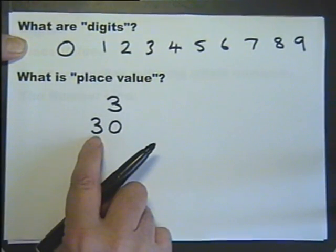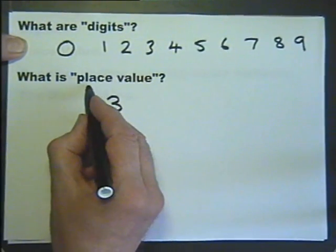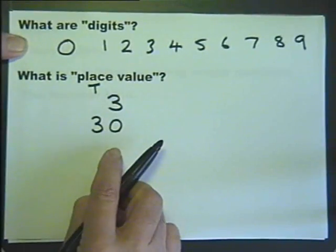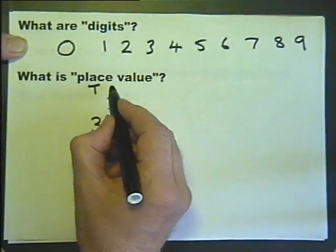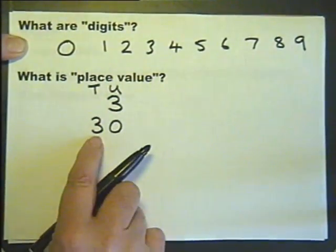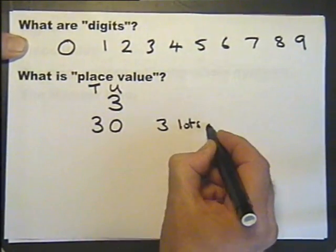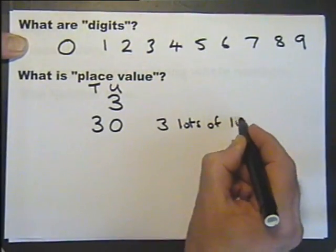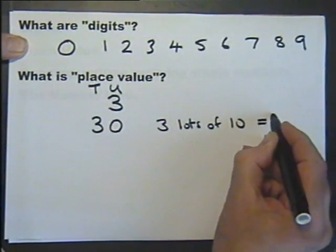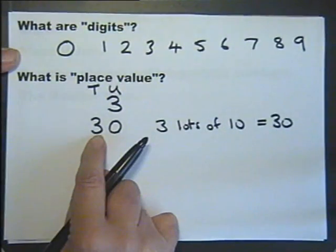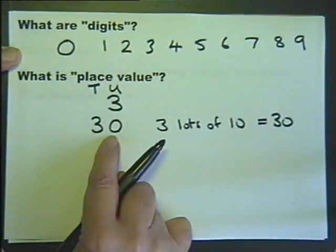This is because the 3 is in the tens column, and the zero is in the units column. So in other words, we have 3 lots of 10. And the 3 lots of 10 is 30. So the digit 3 in this position gives you the number 30.